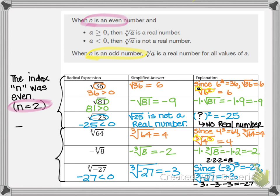These last three examples had an index n that was odd — we did the cube root so n was 3. Now you can see the difference between when your index is an even number versus when your index is an odd number.